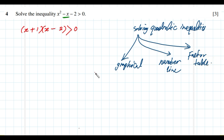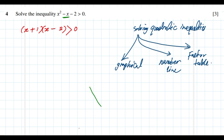The easiest and fastest way is the graphical method, so in this example we use the first method. We simply sketch the curve for the quadratic function. The leading coefficient is 1, which is positive, so the curve takes a concave up shape. The x-axis cuts the curve at two x-intercepts, which define the roots of the quadratic function on the left side.